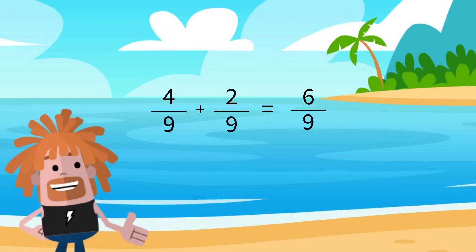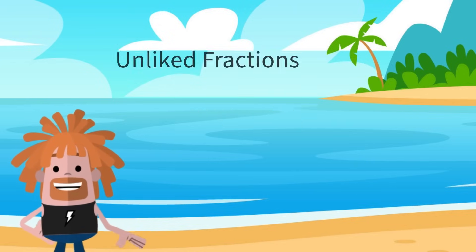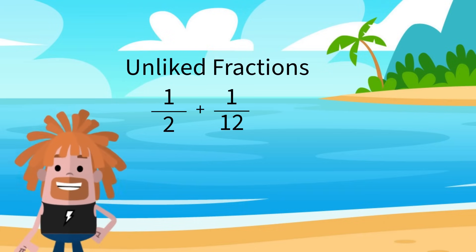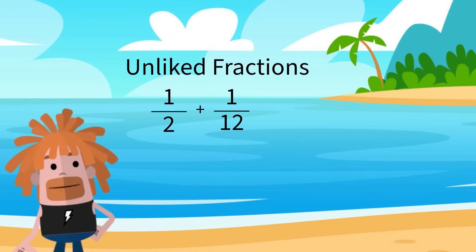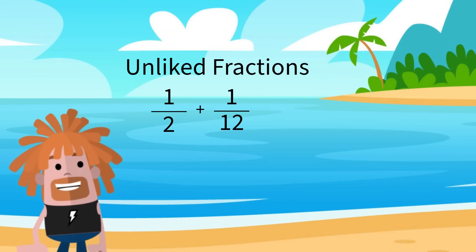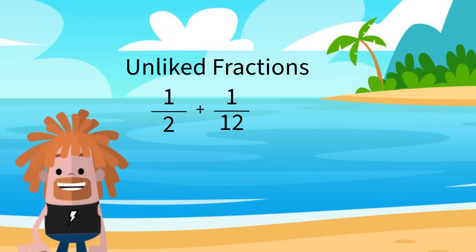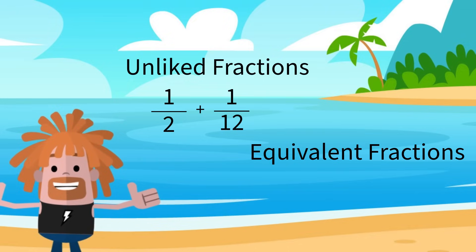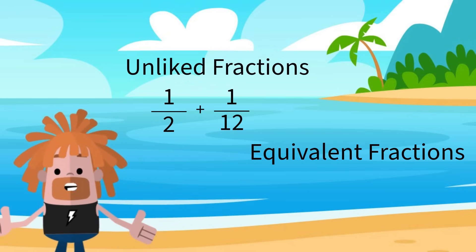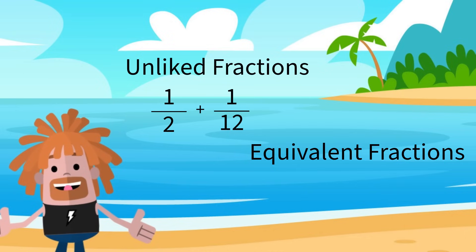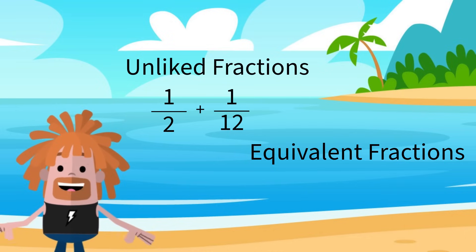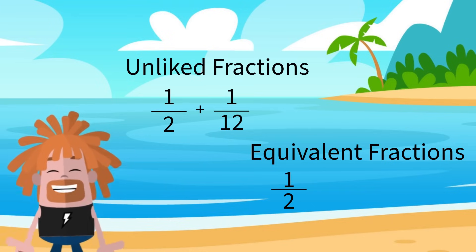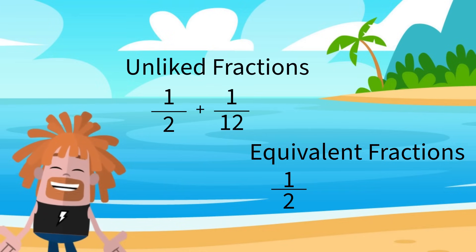But what happens if you are adding and subtracting unlike fractions? To add and subtract fractions with unlike denominators, we need to change our fractions to equivalent fractions that have the same denominator. Equivalent fractions are fractions that have the same value but different top and bottom numbers. For example, 1 half is equivalent to 2 fourths.